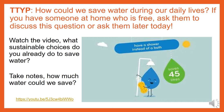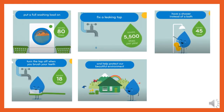Have a think: what sustainable choices do you already do to save water? Watch the video again and take notes about how much water we could save. For example: putting a full washing load on saves 80 litres; fixing a leaking tap can save 5,500 litres per year; having a shower instead of a bath could save 45 litres; turning the tap off when brushing your teeth could save 18 litres. And help protect our beautiful environment.